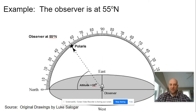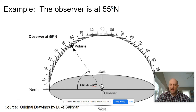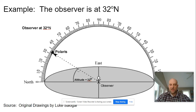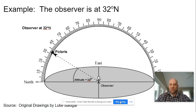In this example, the observer sees the star Polaris at an altitude of 55 degrees off of the northern horizon, meaning this person is located at 55 degrees north. In this example, the observer is located at 32 degrees north, with Polaris being observed at an altitude of 32 degrees. I hope this helps you to review the important concepts related to Polaris.